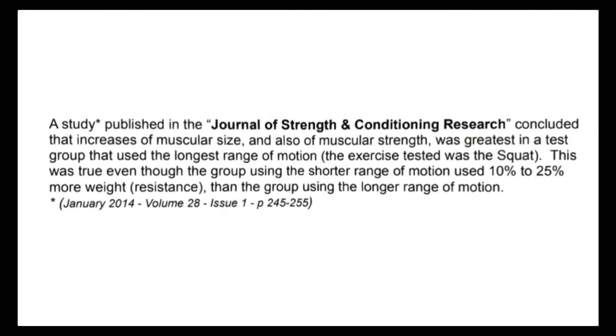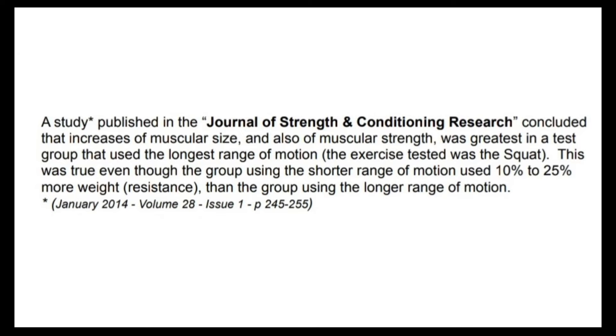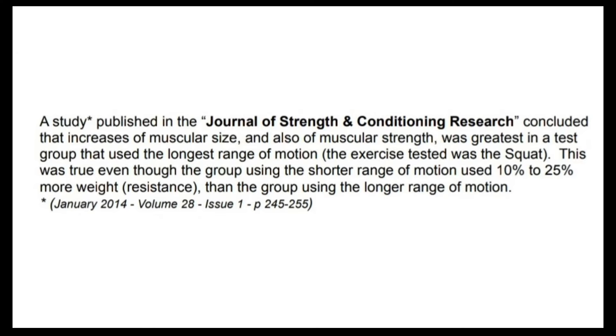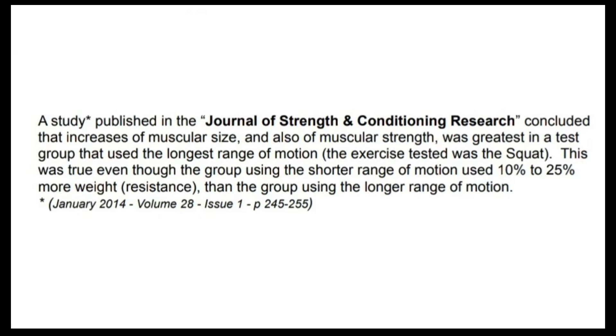Dynamic muscle contraction occurs when a muscle lengthens and shortens against resistance. This type of muscle contraction causes the joint over which that muscle crosses to flex or extend, thereby producing anatomical movement.